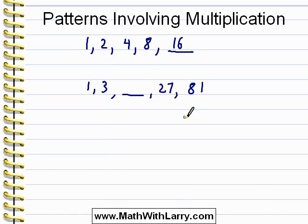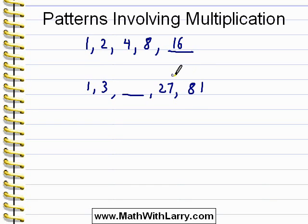What that probably means is that it involves multiplication. 3 is 3 times as big as 1, and 81 is 3 times as big as 27. If you weren't sure, you could do the actual multiplication — 27 times 3 — and you would see that you get 81. This is a pattern involving multiplication by 3, and to get the missing value, we can just do 3 times 3, giving us 9. As a check, 9 times 3 gives us 27, which it does, so we're correct.